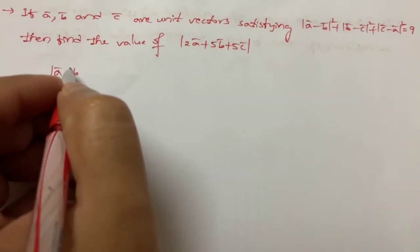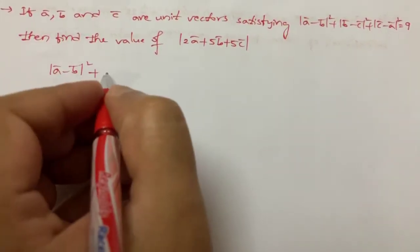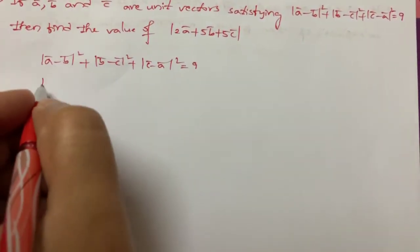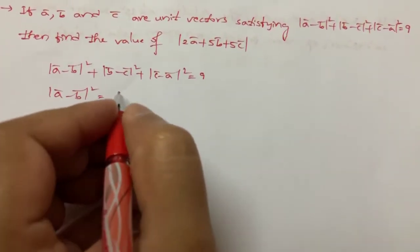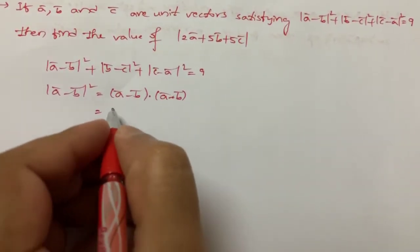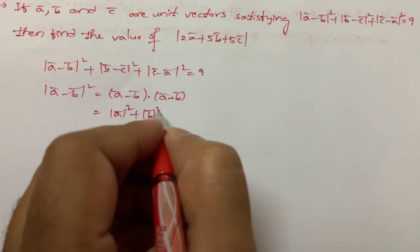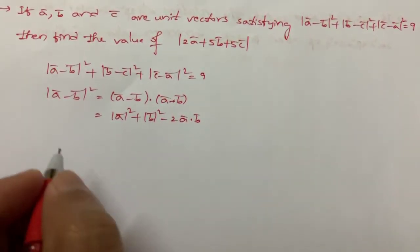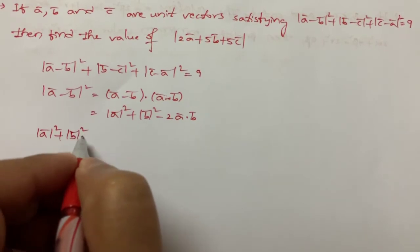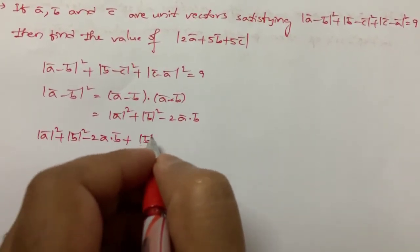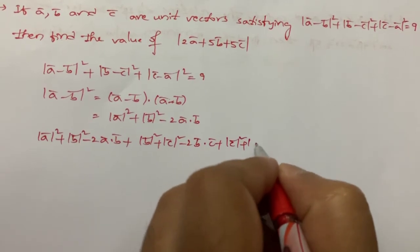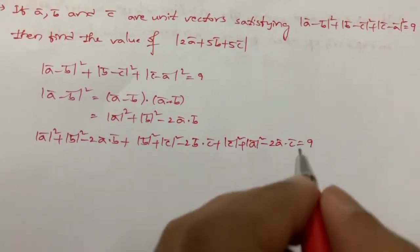First, we will look at the given equation: |a - b|² + |b - c|² + |c - a|² = 9. Now, (a-bar - b-bar)² = (a-bar - b-bar)·(a-bar - b-bar), which expands to |a-bar|² + |b-bar|² - 2(a-bar·b-bar). Similarly expanding all terms, we get |a-bar|² + |b-bar|² - 2(a·b) + |b-bar|² + |c-bar|² - 2(b·c) + |c-bar|² + |a-bar|² - 2(a-bar·c-bar) = 9.